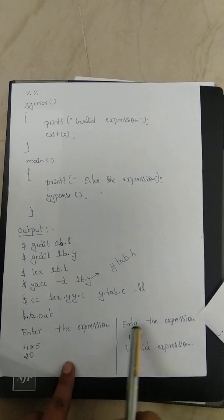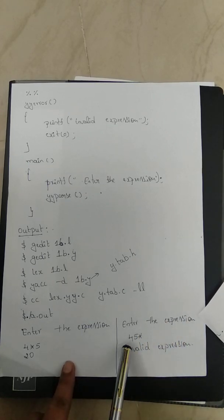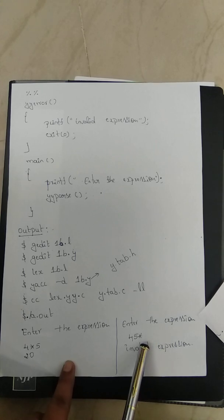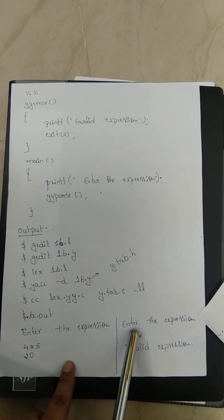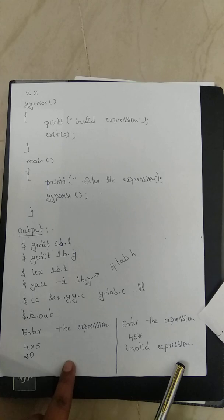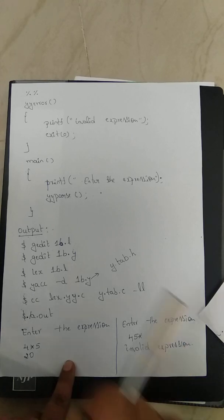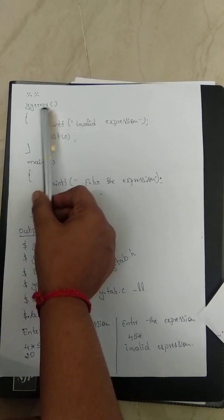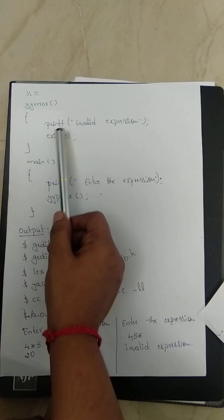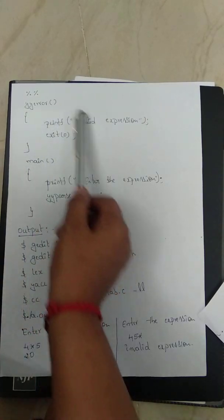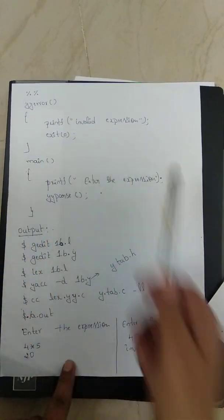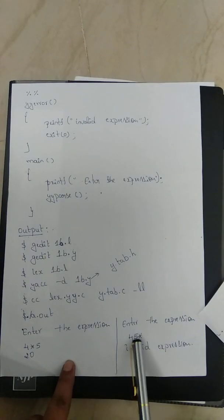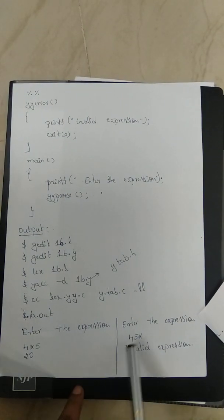For another case, entering 45 followed by the multiplication symbol is an invalid expression, and the program correctly reports it as invalid. An error function is included in the YACC program that is executed whenever an invalid expression is entered from the keyboard.